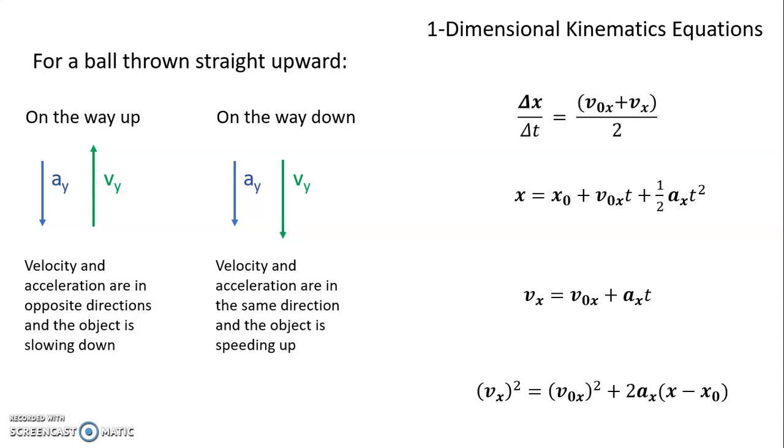And the acceleration for objects that are in free fall near the surface of the earth is 9.8 meters per second squared. The acceleration due to gravity other places—if you're not close to the surface of the earth, if you're say a hundred miles up—well, if you're just like five miles up, that's a pretty good distance from the surface of the earth, but the acceleration due to gravity five miles up is still 9.8 meters per second squared.